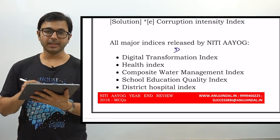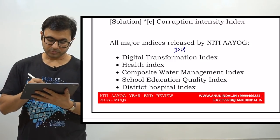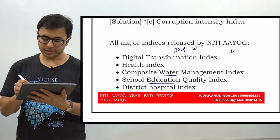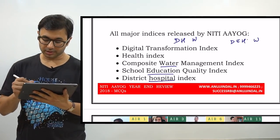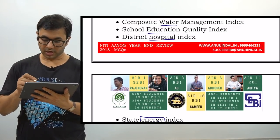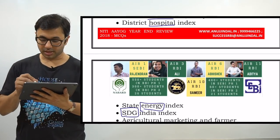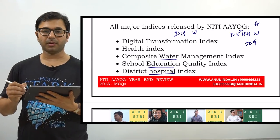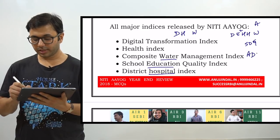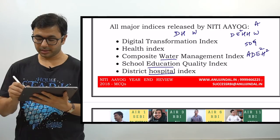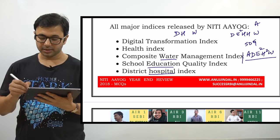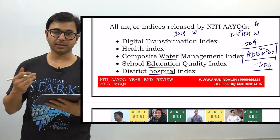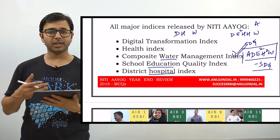The major Niti Aayog indices are: Digital Transformation Index (D), Health Index (H), Composite Water Management Index (W), School Education Index (E), District Hospital Index (H), State Energy Index (E), SDG India Index, and Agriculture Marketing and Farmer Friendly Reforms Index (A). The acronym you can create is AD²H²W plus SDG. This is how you can remember all the indices released by Niti Aayog and simplify your preparation in the remaining 30 days.